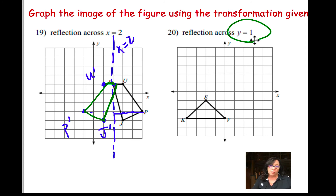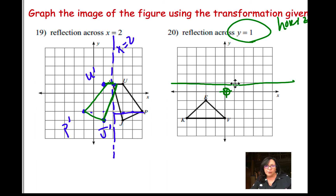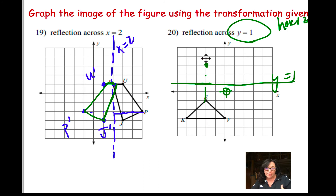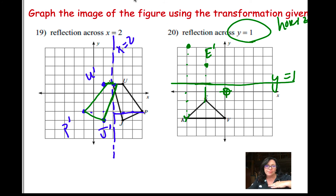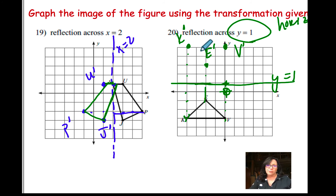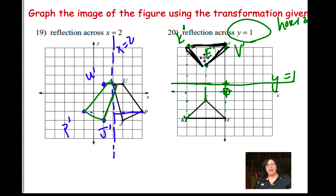This one says reflect across y equals 1. y equals 1 is a horizontal line here. Everything gets reflected across that line. If I took this point and went down 2 from the line, I go up 2 — that's e prime. If I went down 4, I go up 4 — that's k prime. For this value, from y equals 1 I went down 4, so also going up 4, that's v prime. The reflection across y equals 1 gives you a new triangle.